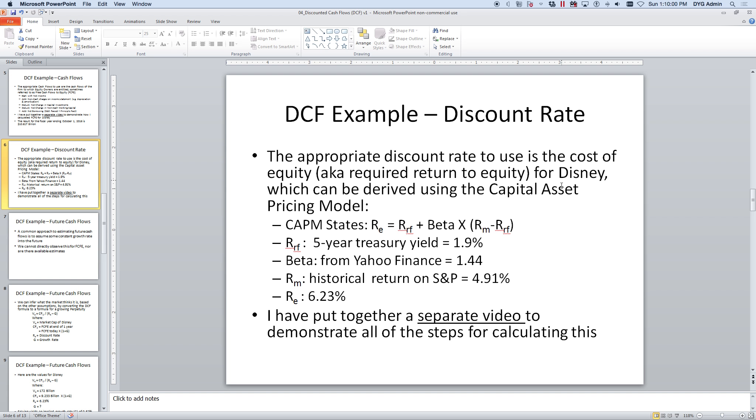You can see in the slide here that I've gone through the Capital Asset Pricing Model states that the return or required return to equity, which could also be the discount rate for equity, is equal to the risk-free return plus the beta of the company times the return on the market minus the risk-free return. And so we need to go get values to put in there. I'm going to just show you where I get those values.